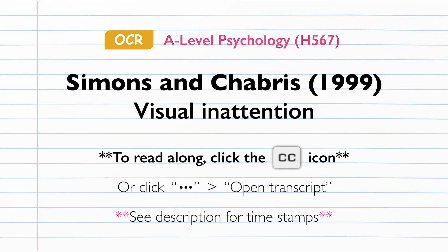The dependent variable was the number of participants in each condition who noticed the unexpected event, either the person dressed as a gorilla or a person holding an umbrella. In order to ensure that the procedure was standardised, a written protocol was created which detailed exactly how the experiment should be run, and given to the 21 experimenters. Each participant was tested individually and allowed to give informed consent to take part.